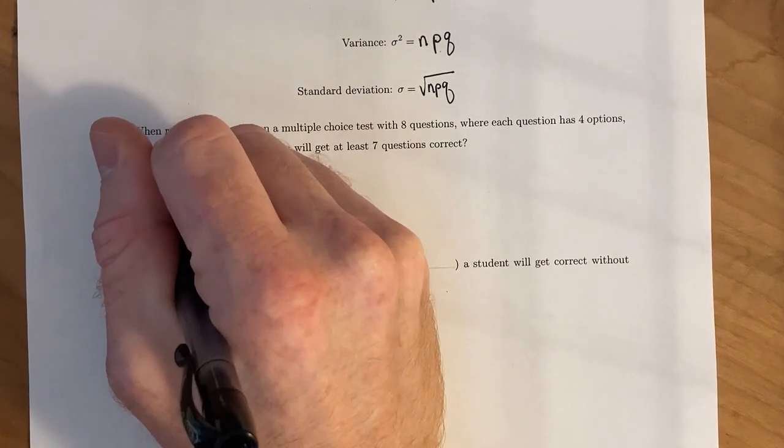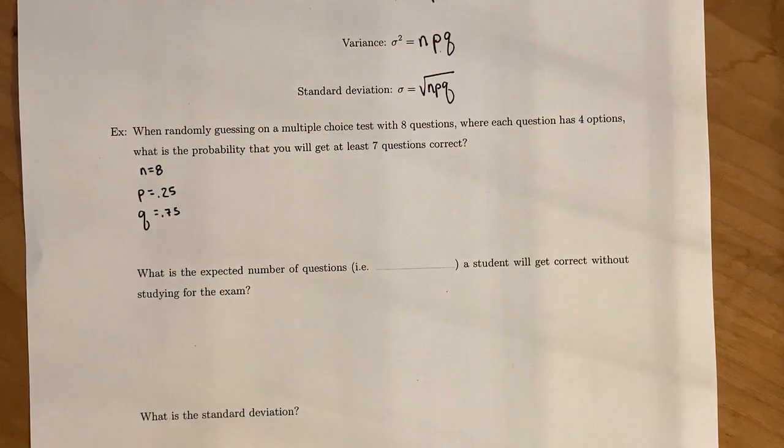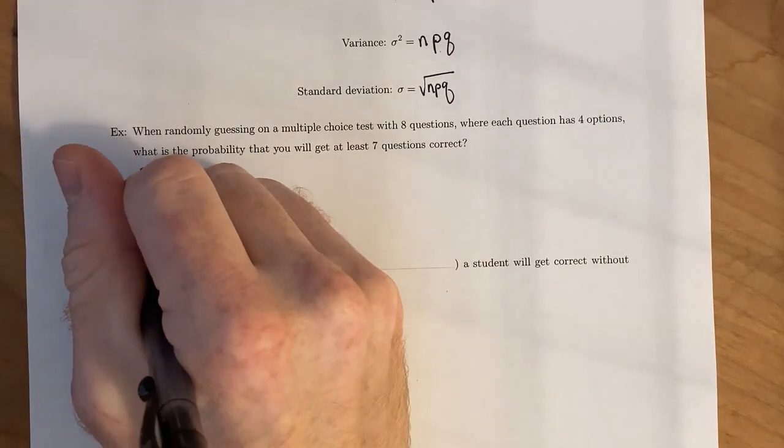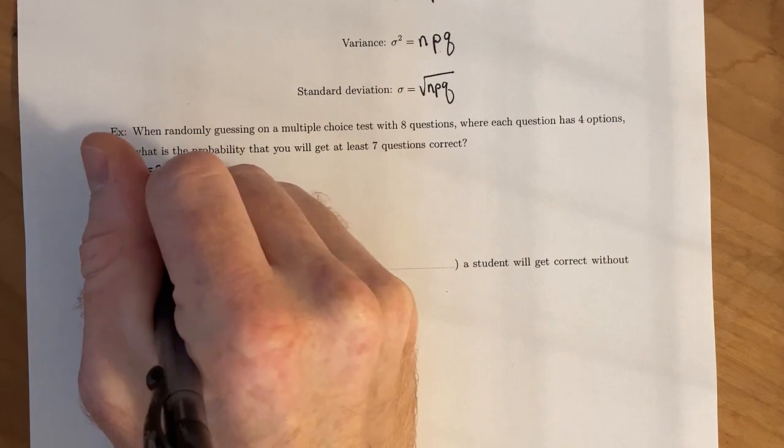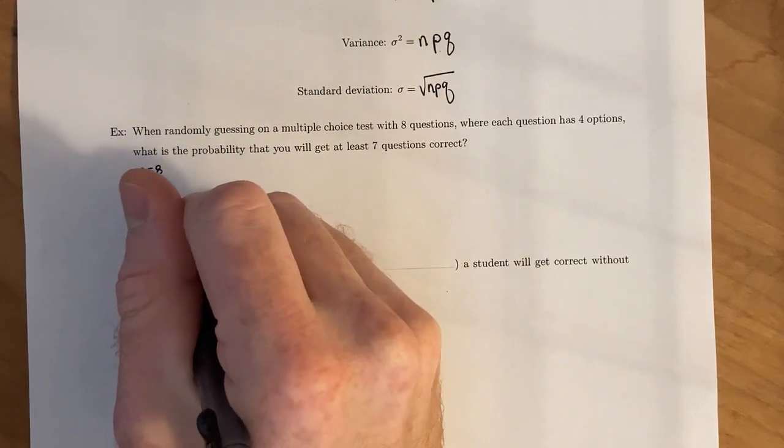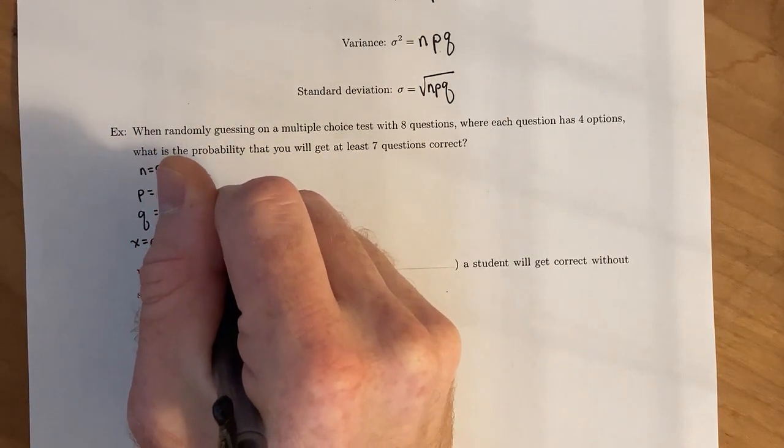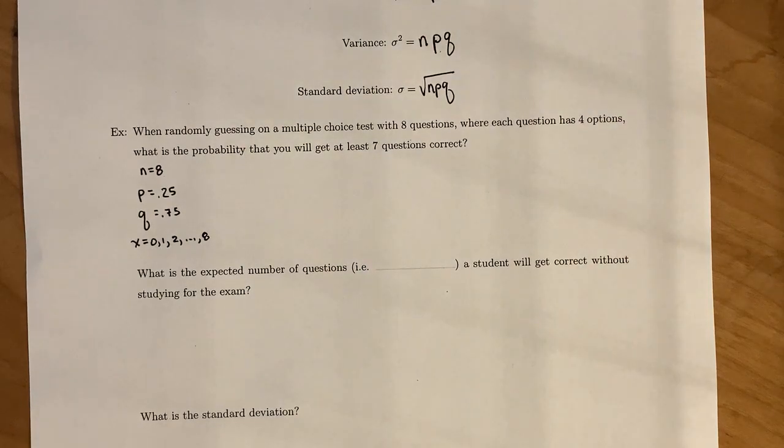Our Q, the probability of not getting it correct, is 0.75. And our random variable is just going to keep track of how many questions we get correct. So, we're going to have X equals 0 questions correct, 1 question correct, 2 all the way up to 8. And so, this is an example of a binomial distribution.